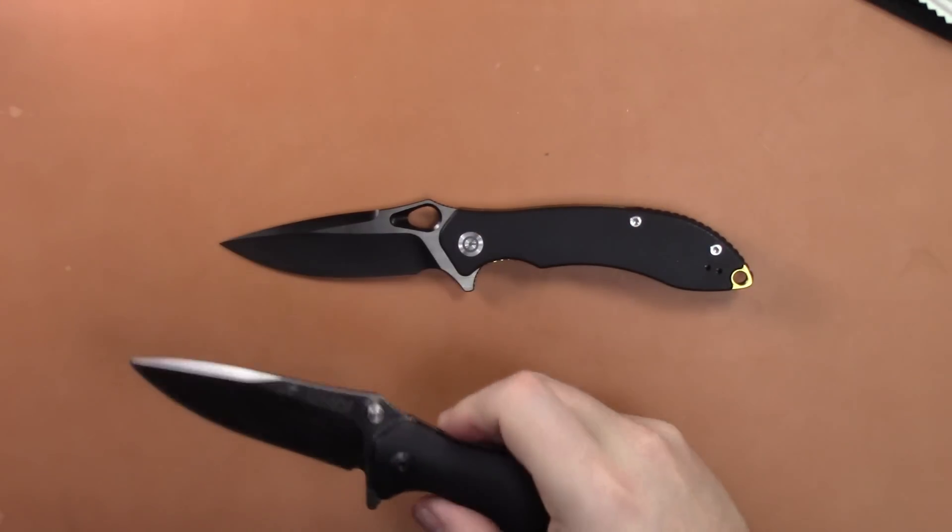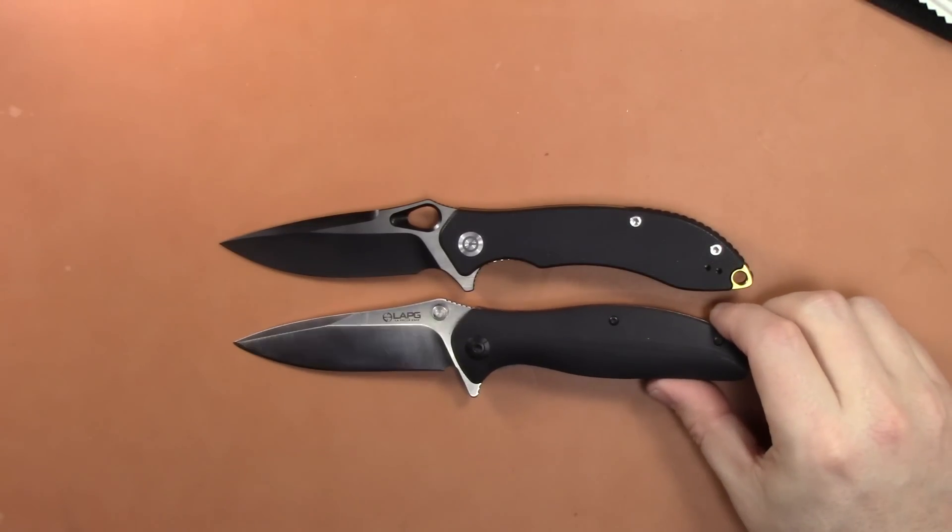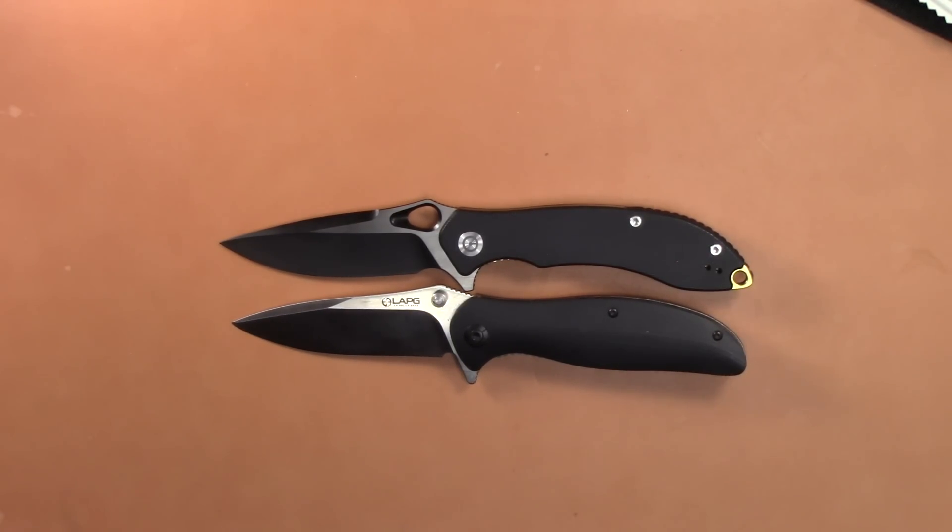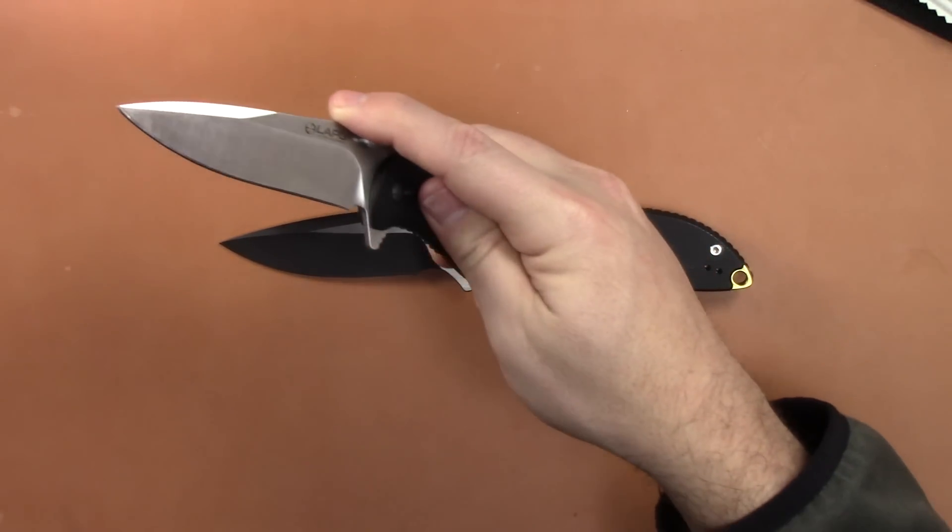And since I've got it here, the LA Police Gear S35 knife just happened to be sitting out here. So it's a little bit smaller. The Wii is a little bit bigger.